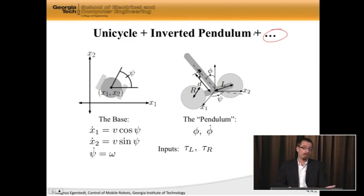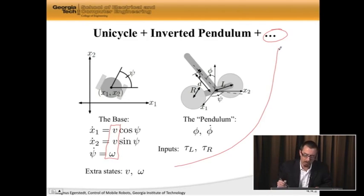The inputs to a Segway robot are torques, wheel torques - the left wheel torque and the right wheel torque. Torques translate into forces, or torques and forces translate into accelerations. But here, in the unicycle, these are our old control inputs, the velocities. Since we have inputs that act as torques, we need to actually add v dot and omega dot into the equation. So v and omega are going to be extra states. That's where the plus dot dot dot comes from.